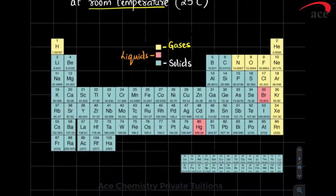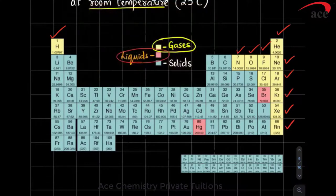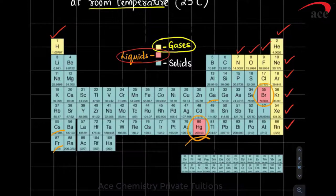If you see a periodic table, elements labeled yellow in their boxes are all gases: hydrogen, helium, fluorine, oxygen, nitrogen, neon, argon, krypton, xenon, radon — they are all gases. Anything shown in orange color is liquid. Remaining all are solids. There are some metals like gallium, cesium, and francium that can become liquid but at slightly higher temperatures. At room temperature, the only liquid metal is mercury. All other metals are solid. The only non-metal which is liquid at room temperature is bromine.